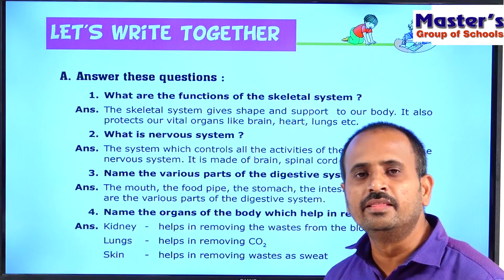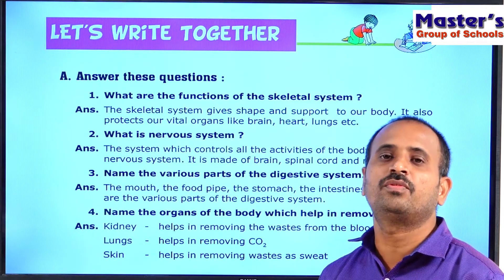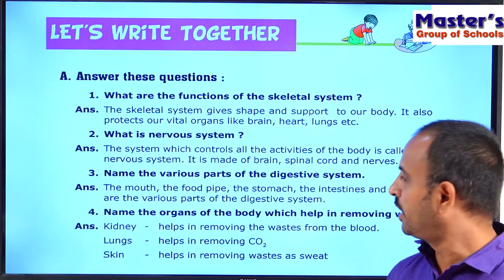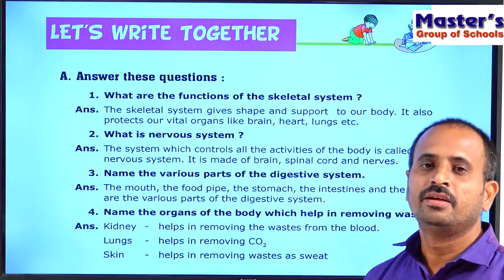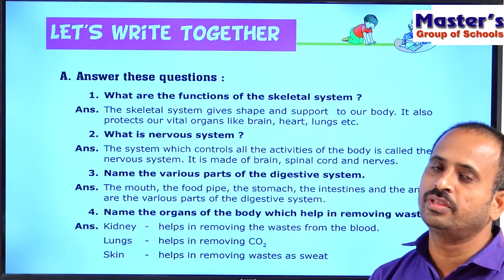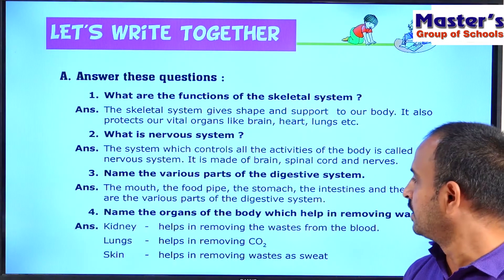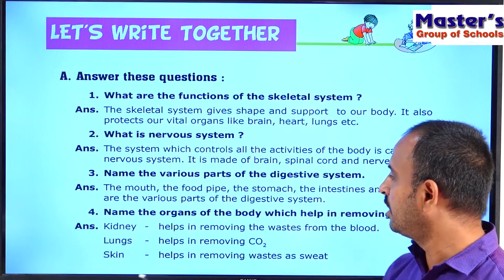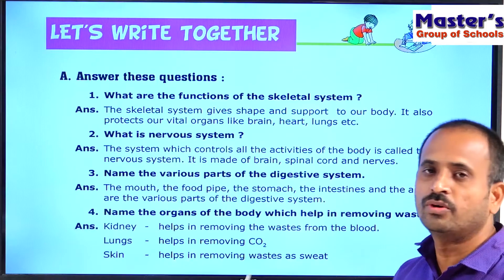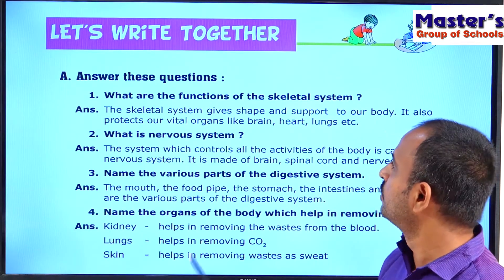The kidneys purify our blood daily — they act as filters, removing impurities from the blood and sending them out in the form of urine. The lungs take in oxygen and remove carbon dioxide, which is expelled through our nose. The skin removes excess minerals — that is, excess salts and excess water — through perspiration. These three organs are helpful in removing wastes from the body.